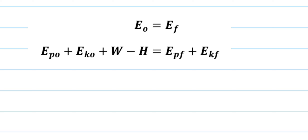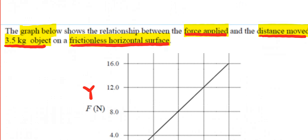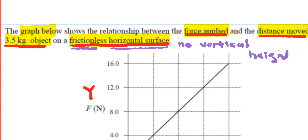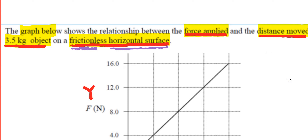The work-energy theorem states that energy is conserved, so energy at the beginning equals energy at the end. Since we're on a horizontal surface, there is no vertical height, which means there is no potential energy — because potential energy is mgh. And there's no friction either.